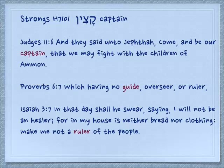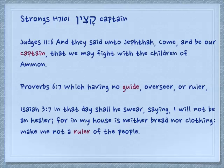We have a related word, katzin, which means captain or ruler, in the sense that that is a person who makes the decision — and so something at that point is cut off, it's decided. Judges 11:6 — And they said unto Jephthah, come and be our captain, that we may fight with the children of Ammon. Proverbs 6:7 — Which having no guide, overseer, or ruler. Isaiah 3:7 — In that day he shall swear, saying, I will not be a healer, for in my house is neither bread nor clothing; make me not a ruler of the people — I don't want to make any decisions.